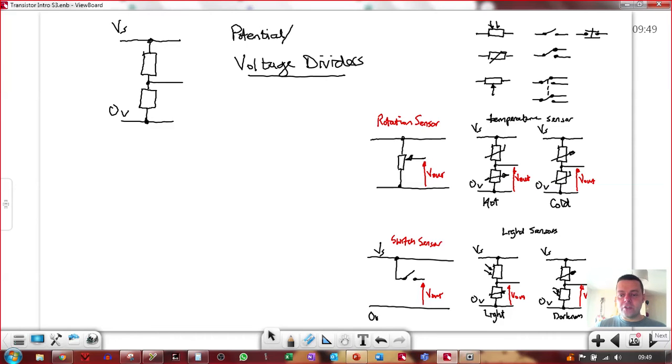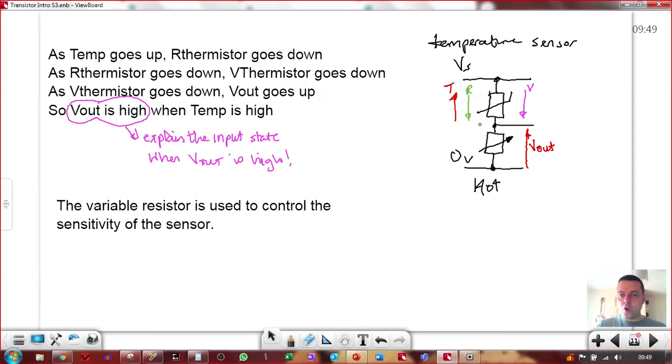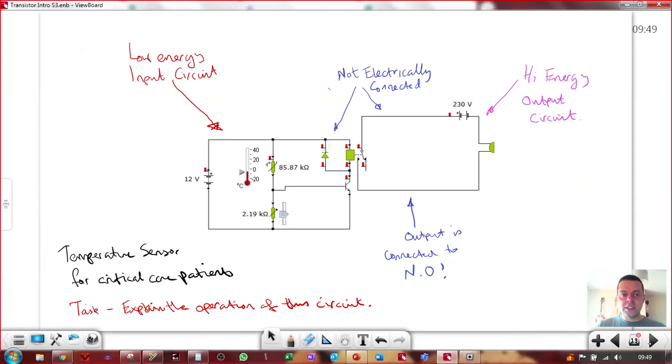Recognize what kind of sensor it is first of all, and then start talking your way through the sensor, explaining what Vout does in response to whatever it's sensing. That's the part about explaining how the sensor works.